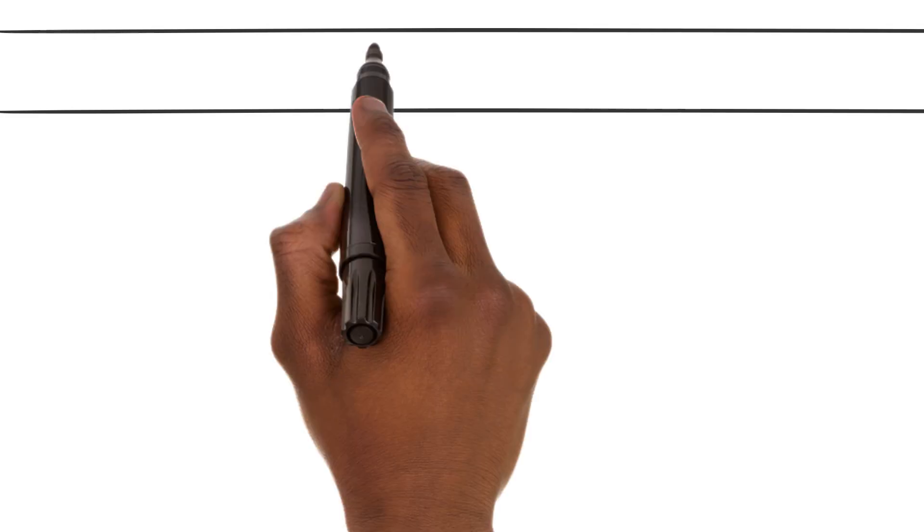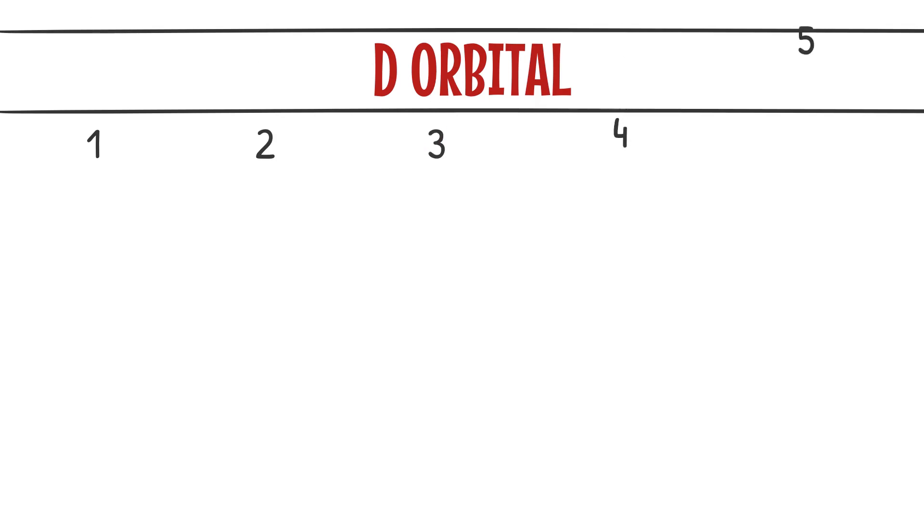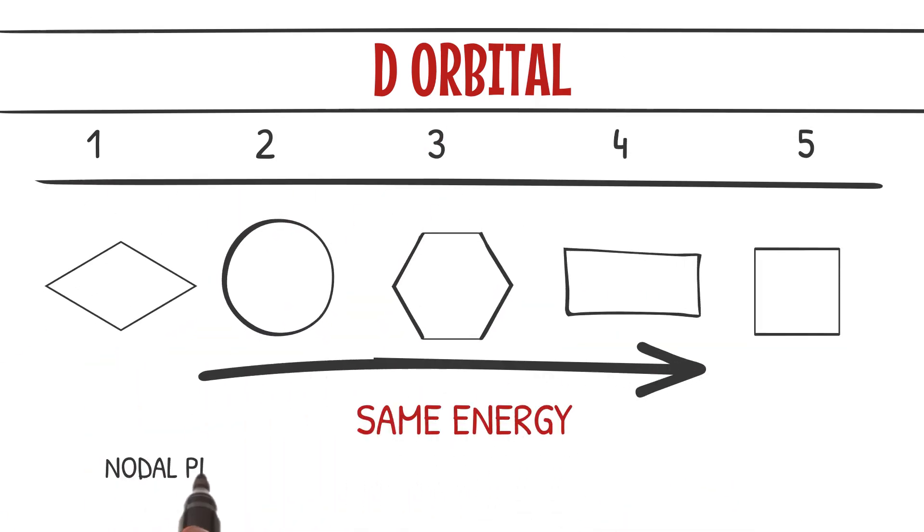Moving on to the d orbitals, they become even more intricate. The 5d orbitals have various shapes but the same energy level. They have nodal planes that divide the orbital into distinct lobes.